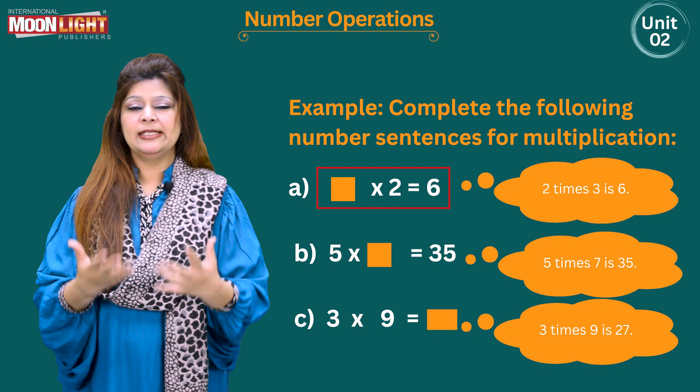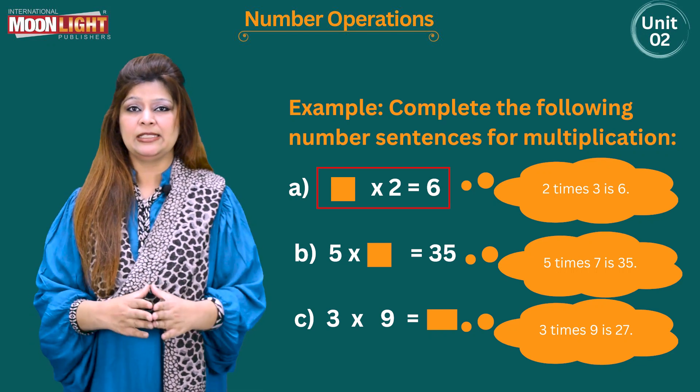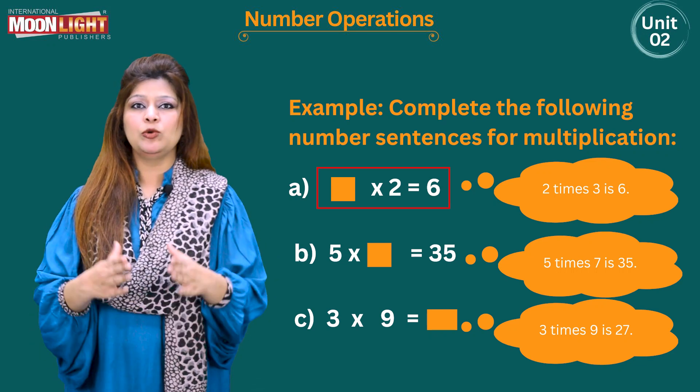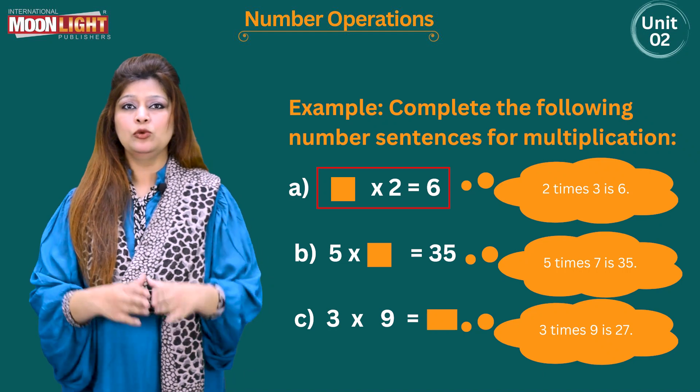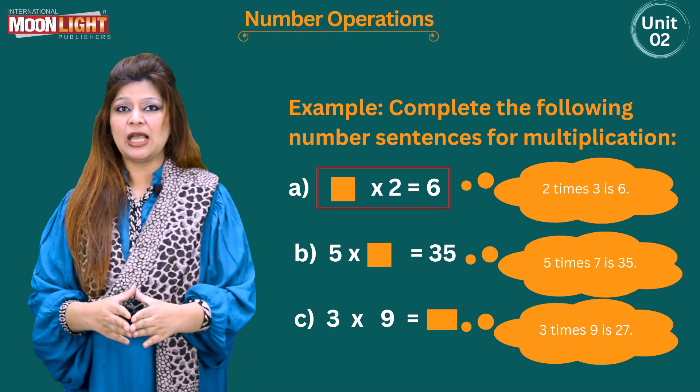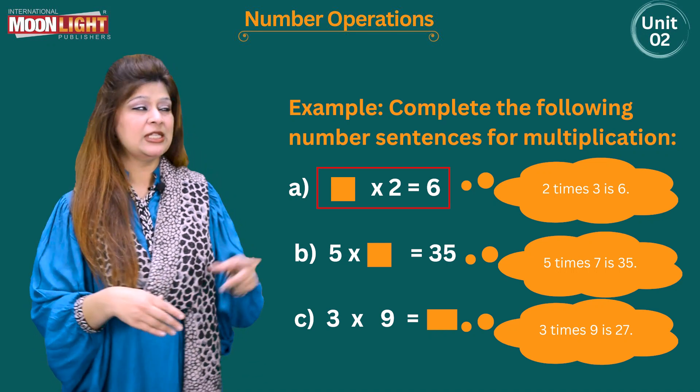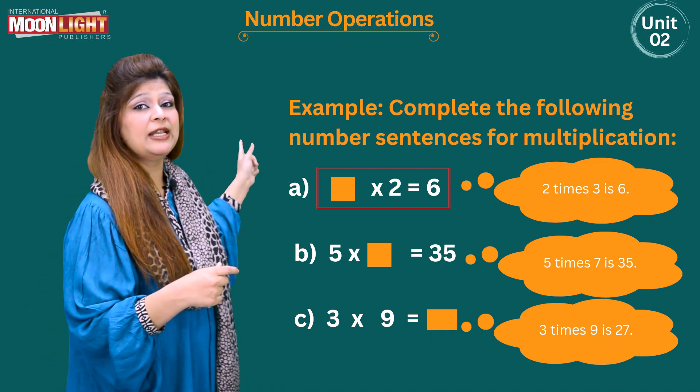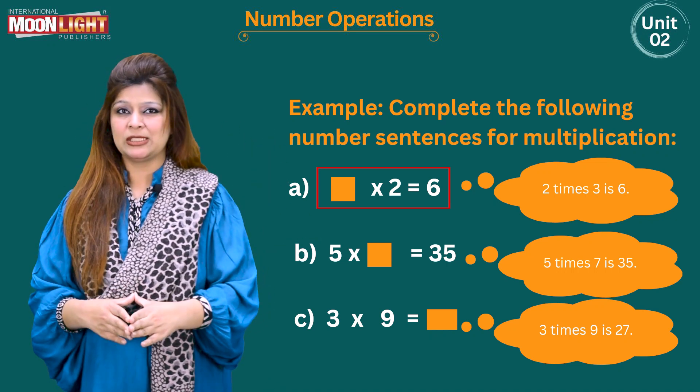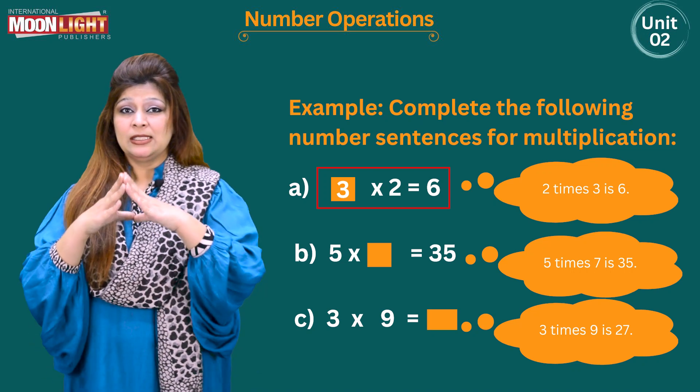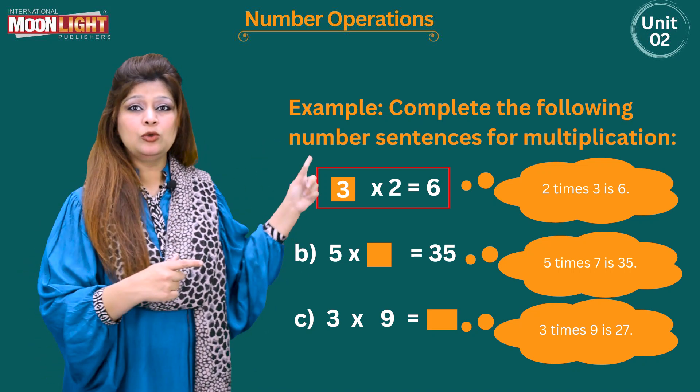We are going to read up to the number 6. So we are going to recall 2 times table: 2 ones are 2, 2 twos are 4, 2 threes are yes, 2 threes are 6. So this is 6 over here. So I will put the number 3 in this empty box.